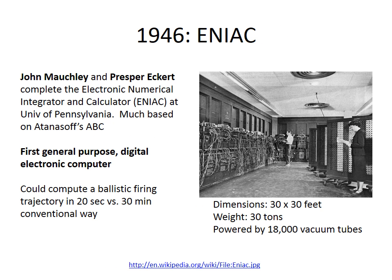In 1946, just after the end of World War II, John Mauchly and Presper Eckert completed work on the ENIAC at the University of Pennsylvania — the first general-purpose digital electronic computer, precisely what today's computers are. The ENIAC was originally programmed to compute ballistic firing trajectories, taking only 20 seconds to compute trajectories that would take 30 minutes for humans. It was a huge computer — 30 by 30 feet, weighing 30 tons. It used vacuum tubes to represent digital information; these tubes used a fair amount of electricity, ran hot, and would burn out periodically. It would take a large team to program the ENIAC and keep it working.